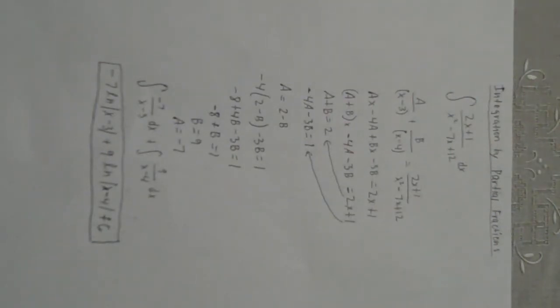Next all you have to do is solve for a and b. So you have a equals 2 minus b and negative 4 times 2 minus b minus 3b equals 1. Negative 8 plus 4b minus 3b equals 1. Negative 8 plus b equals 1 and b equals 9.